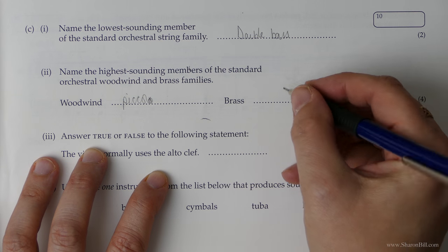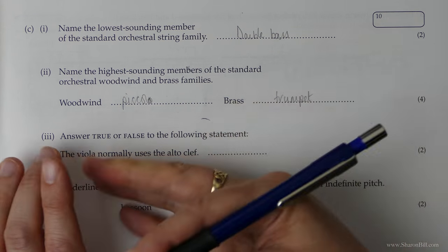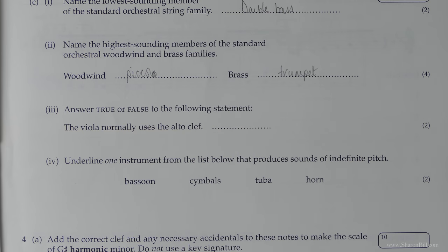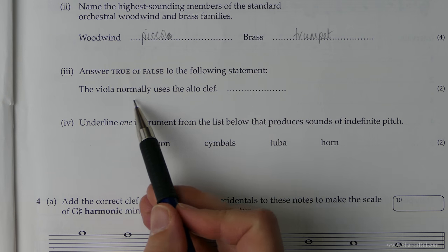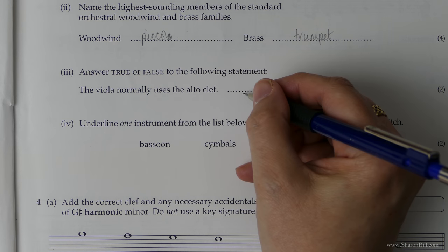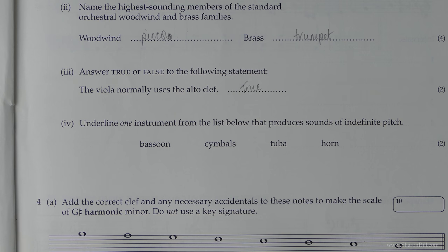And for the brass, it's the trumpet. So is this correct, this statement? The viola normally uses the alto clef. Yeah, that is correct. True.